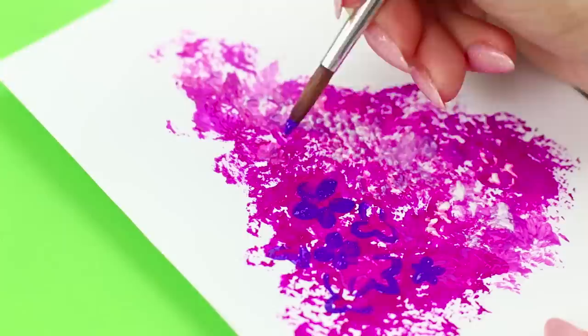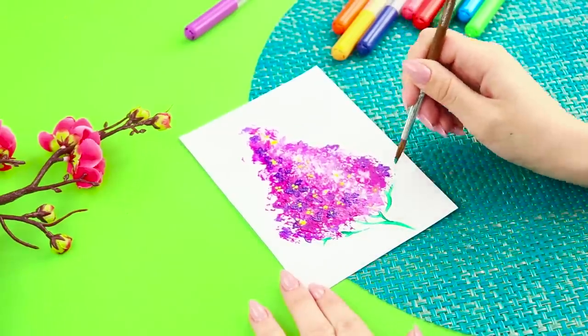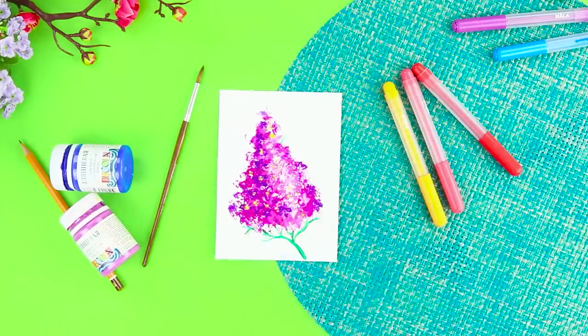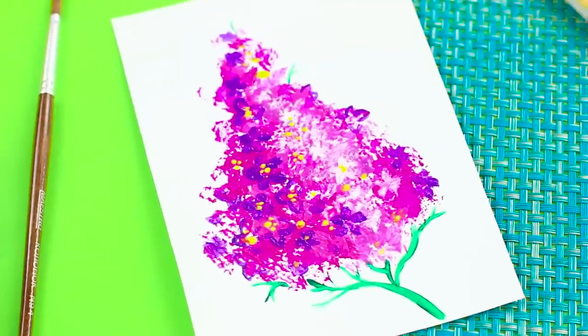Next, take a brush and draw details with contrasting colors. Draw a green twig. The postcard is ready! And now try to find a five-leaf flower on this lilac branch. It'll bring you good luck!